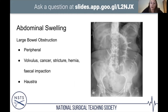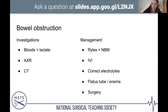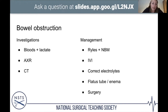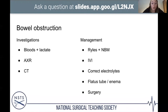Investigating bowel obstruction: baseline bloods including electrolytes (potassium, calcium, magnesium, phosphate) as electrolyte derangement can cause ileus — slowing of peristalsis. Check lactate — as the bowel approaches its critical stretch point, lactate rises; a high lactate with obstruction on X-ray means imminent perforation and requires immediate escalation. Abdominal X-ray and ultimately CT to determine the cause of obstruction and plan operative management.